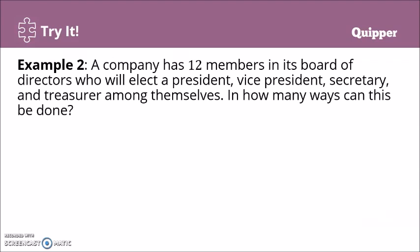Example number 2. A company has 12 members in its board of directors who will elect a president, vice president, secretary, and treasurer among themselves. In how many ways can this be done? First, we have how many positions? President, vice president, secretary, and treasurer—that's 1, 2, 3, 4. We are going to select them from 12 members. So if we take nPr, our n would be 12, and our r is 4.